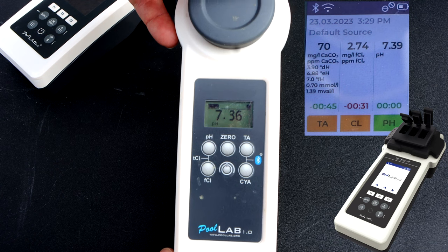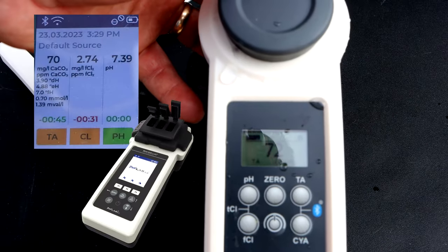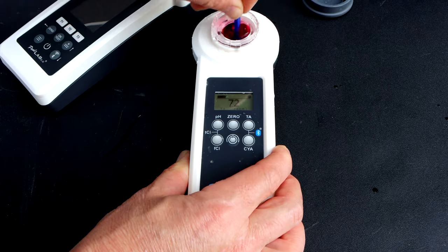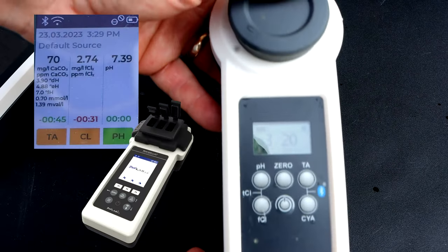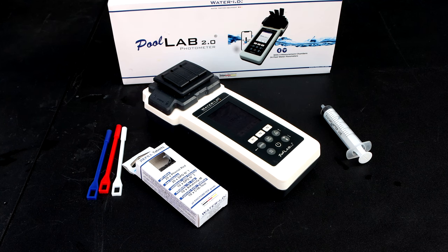The pH is coming in at 7.36 and the total alkalinity is coming in at 72. The free chlorine is coming in at 3.2.